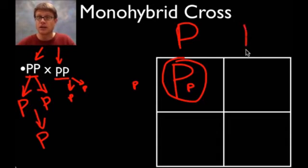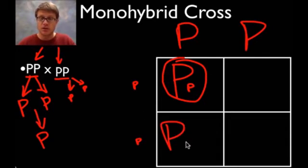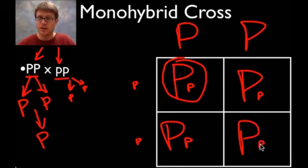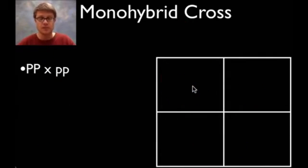You don't really need a big Punnett square. Now you could do that, you could fill it in—big P over here, little p over here. But if you do that, you're going to get the same thing in all of the boxes. It's still a one to one ratio. In other words, 100% of the time you're going to have that.